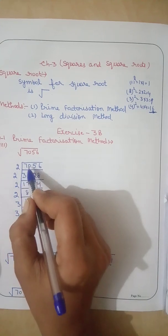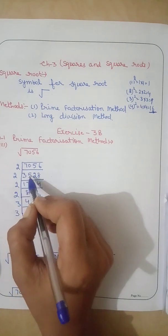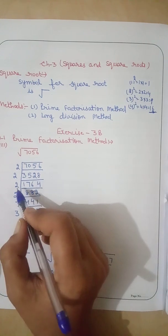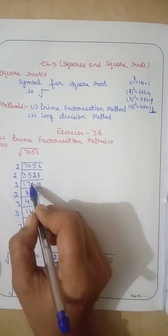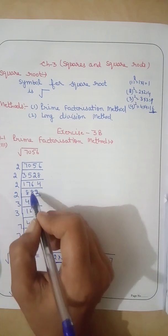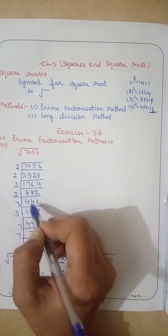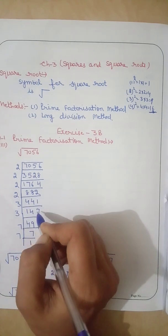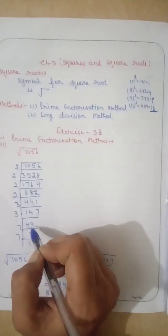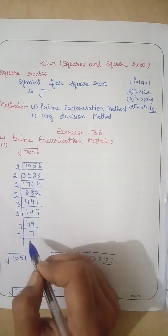2 times 3 is 6, 2 times 5 is 10, 2 times 2 is 4, 2 times 8 is 16. Again by 2: 2 times 1 is 2, 2 times 7 is 14, 2 times 6 is 12, 2 times 4 is 8. Again 2: 2 times 8 is 16, 2 times 8 is 16, 2 times 2 is 4. Again by 2: 2 times 4 is 8, 2 times 4 is 8, 2 times 1 is 2. Now by 3: 3 times 1 is 3, 3 times 4 is 12, 3 times 7 is 21. Again by 3: 3 times 4 is 12, 3 times 9 is 27. By 7: 7 times 7 is 49, 7 times 1 is 7.